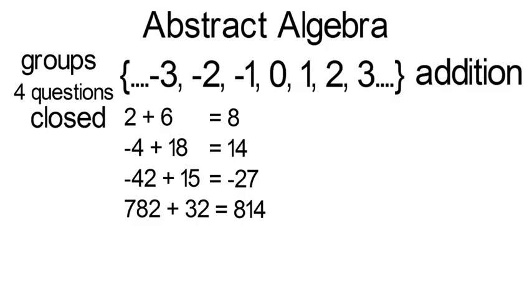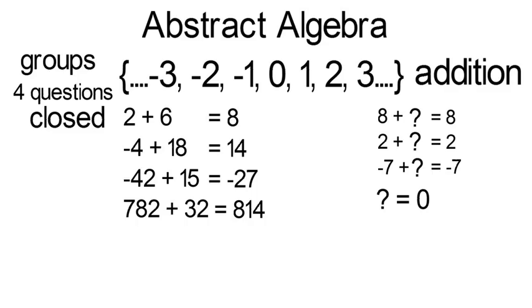Okay, second, is there some integer in our set where no matter what other integer I add to it, I get the same one out? And yes, again, this is true, that integer is zero. This is called the identity element, which for this specific set is zero. It adds to anything in our set and you get the same thing out.